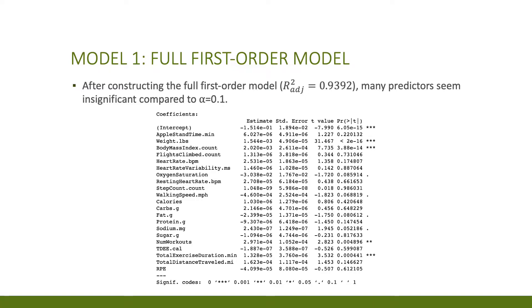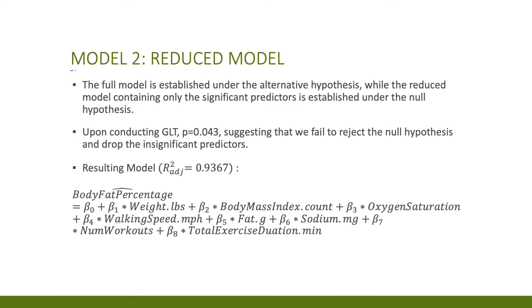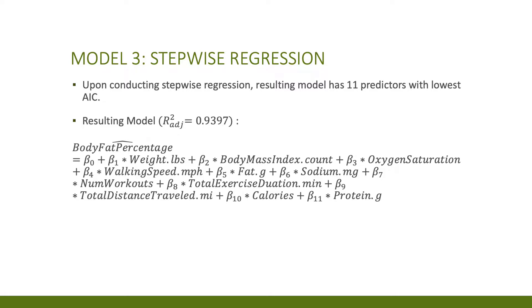I proceeded by conducting the GLT to see if these insignificant predictors could be dropped. The null hypothesis involved the reduced model with the predictors dropped, while the alternative hypothesis involved the full model. With the p-value less than alpha, I concluded that the predictors could be dropped. As you can see, the resulting model has a slightly lower R-squared which is 0.9367 compared to the previous model.